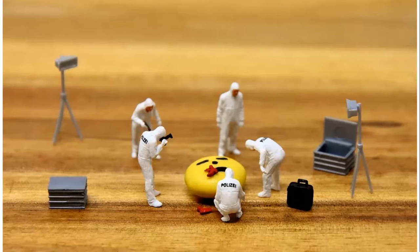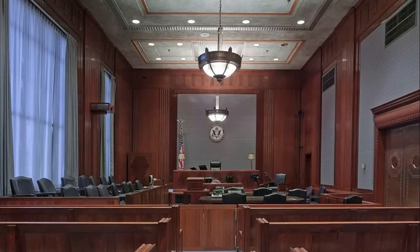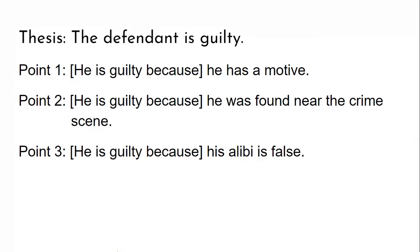When you go to write, you've done the thinking. At this point, you're the lawyer in court presenting your findings to your reader. Just like a lawyer wouldn't want the jury to have any doubt about the main point, you don't want your readers to be in doubt of what your point is. So if our thesis is 'the defendant is guilty,' you'd take your reader logically step by step through sub-points — he has a motive, he was found near the crime scene, his alibi is false — each explained in turn. Your main point should run through the entire argument, leading your reader through sub-points that prove that overall conclusion.